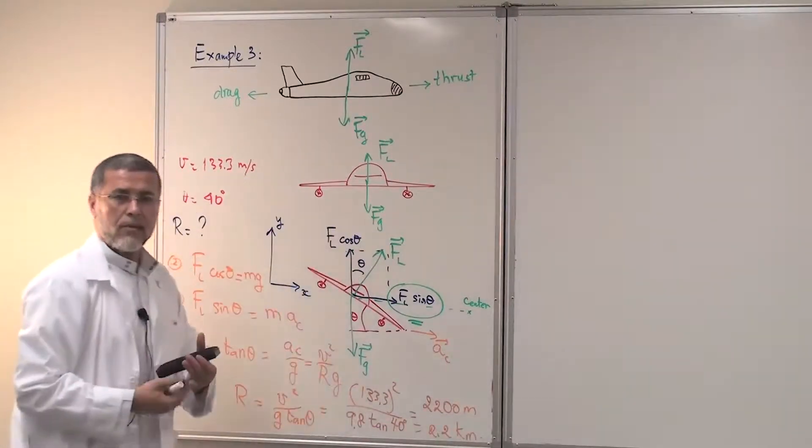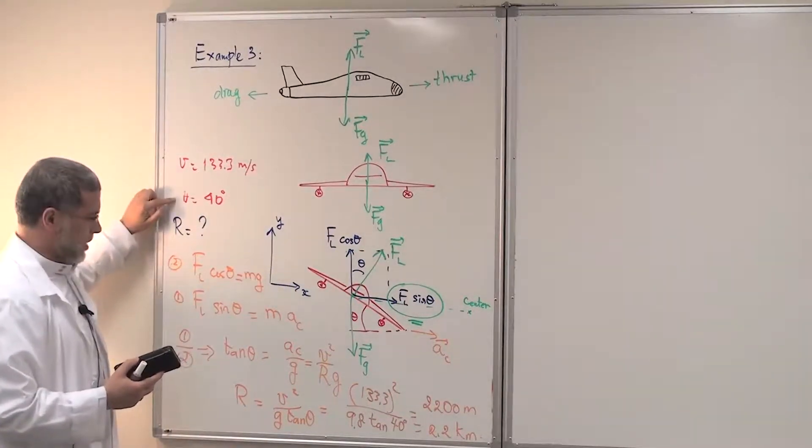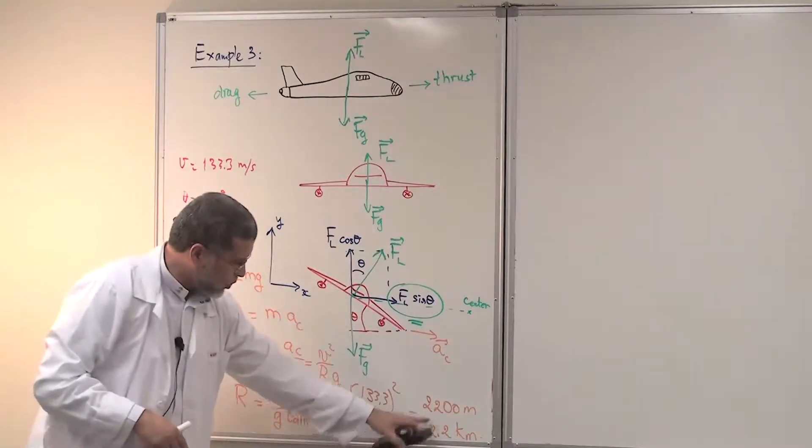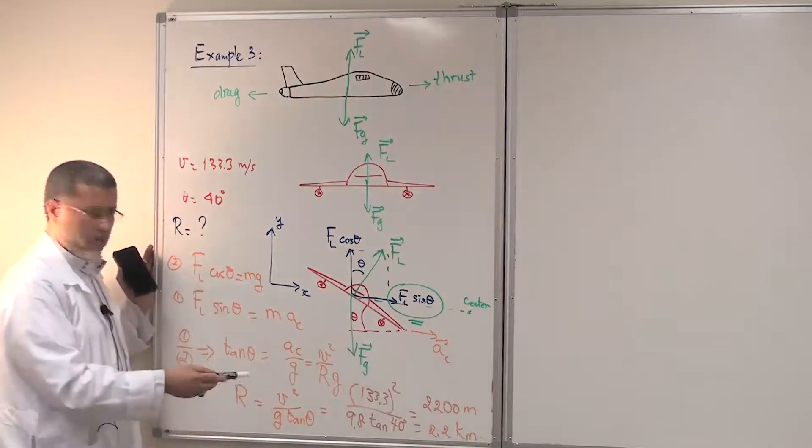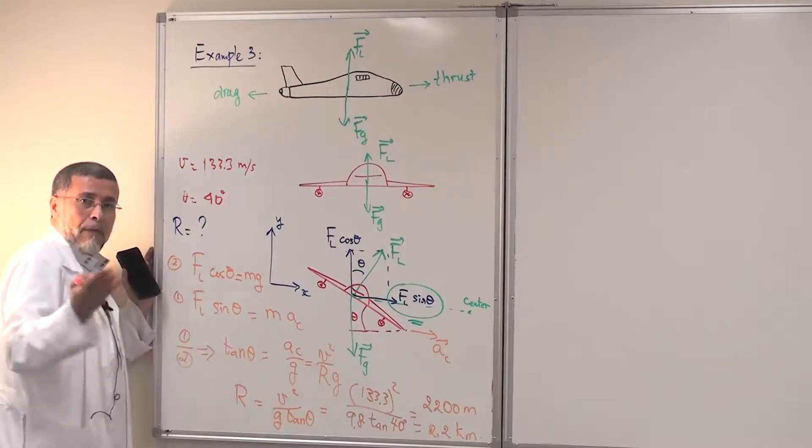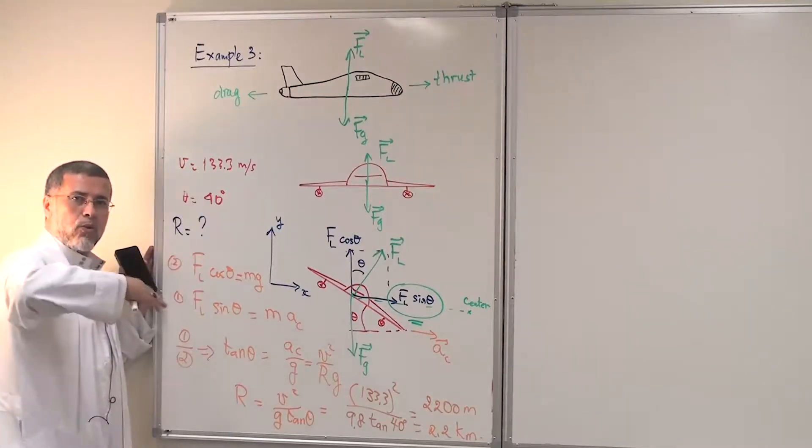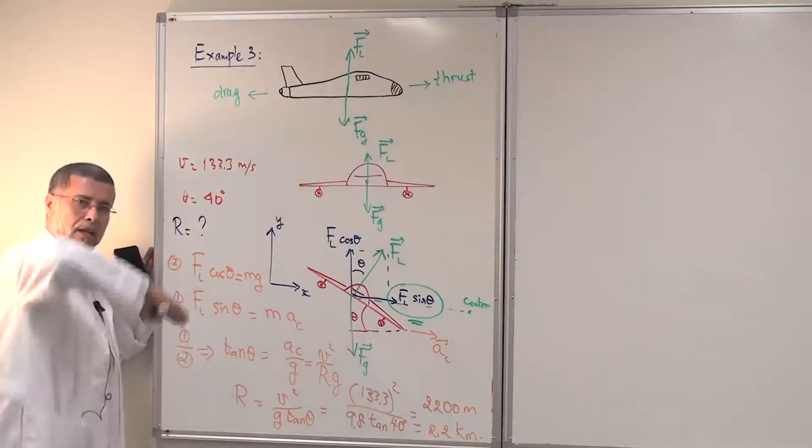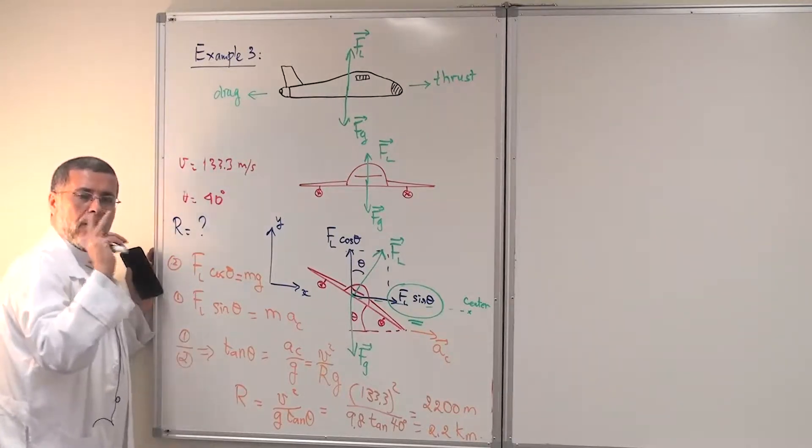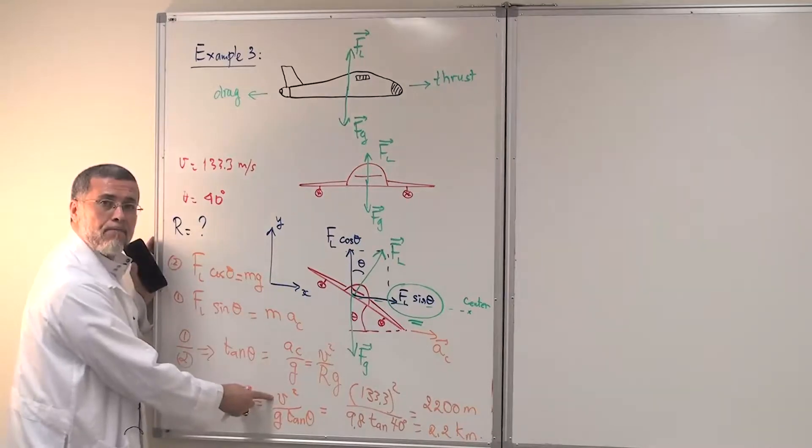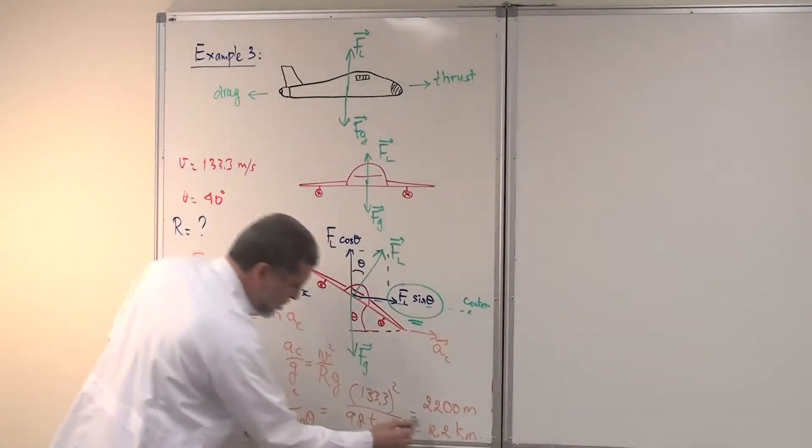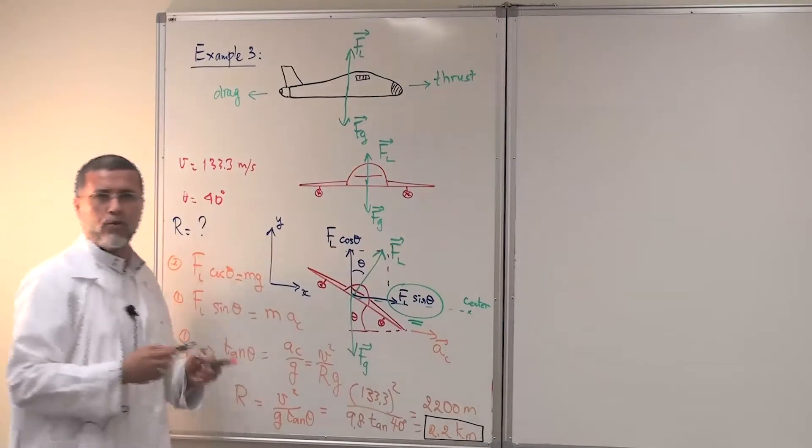So with these numbers here, with this speed and this angle here, the circular path will have a radius of 2.2 kilometers. Of course, you can play with this number, with the circular path, by changing V and the angle of inclination. So it depends. The pilot, he knows how much he has to incline himself, the angle theta of the inclination, which will affect the radius. So the radius is affected by two quantities, the angle theta and the speed of the airplane. So the answer here will be 2.2 kilometers, the radius of the circular path is 2.2 kilometers.